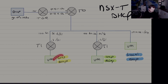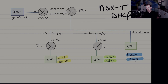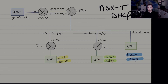The second option is a gateway DHCP server. The DHCP server is configured on the T1 router and it will be available to all segments connected to that T1 router. The last option is DHCP relay, which is also configured on the T1 or T0 router. It picks up DHCP requests and forwards them to another DHCP server somewhere in your network.